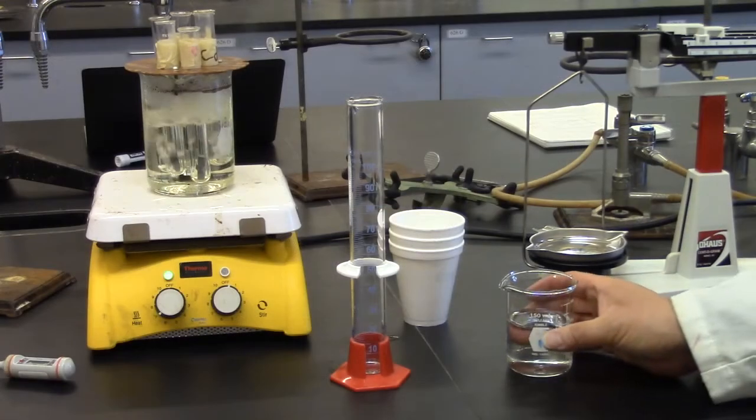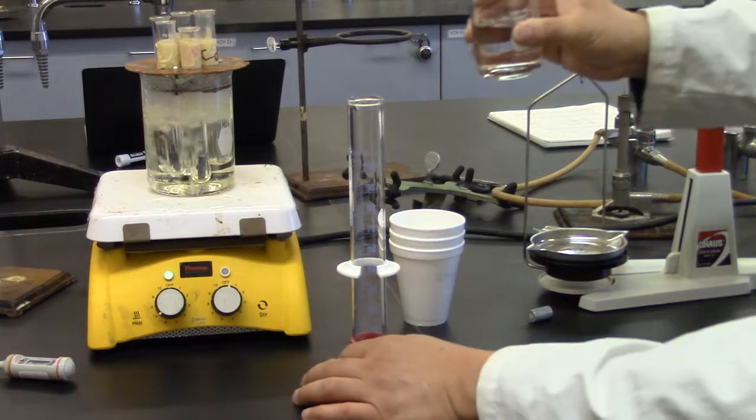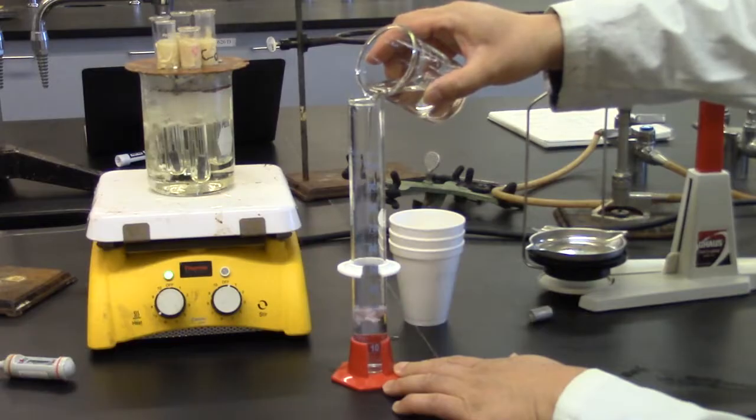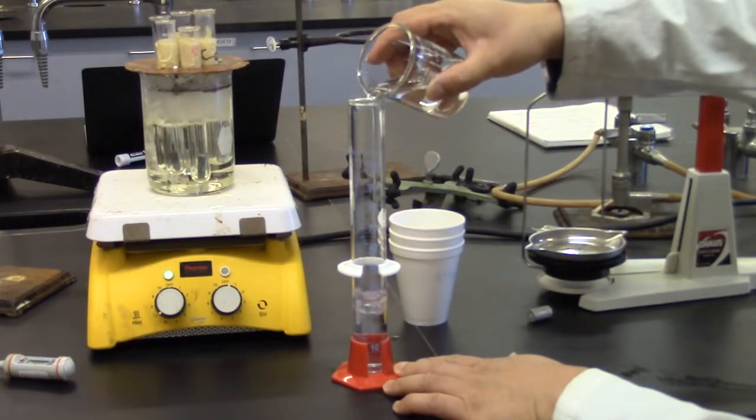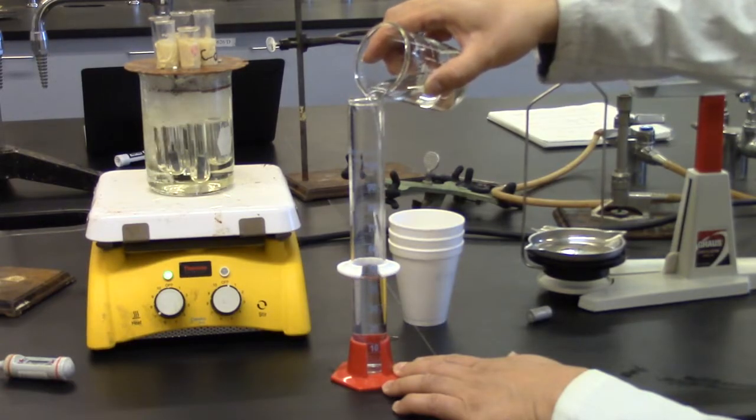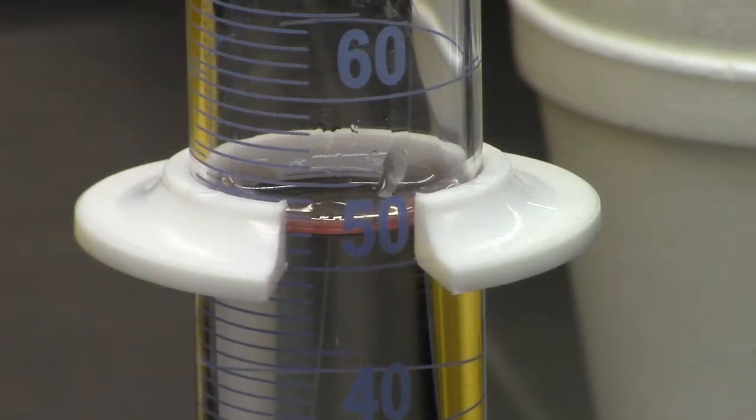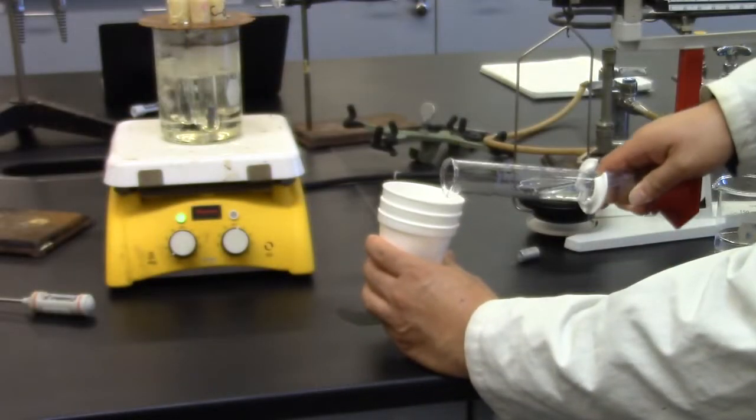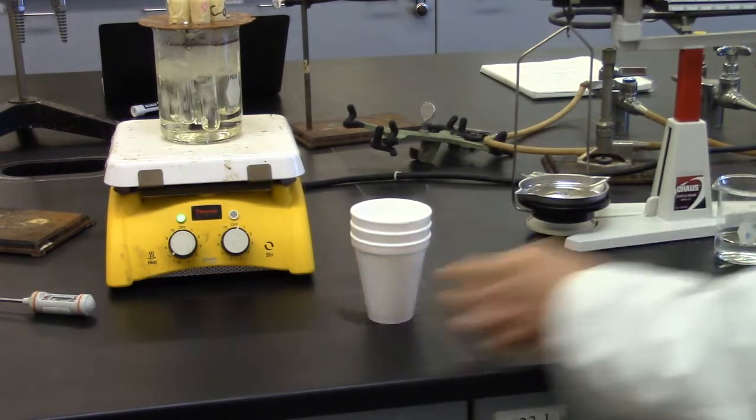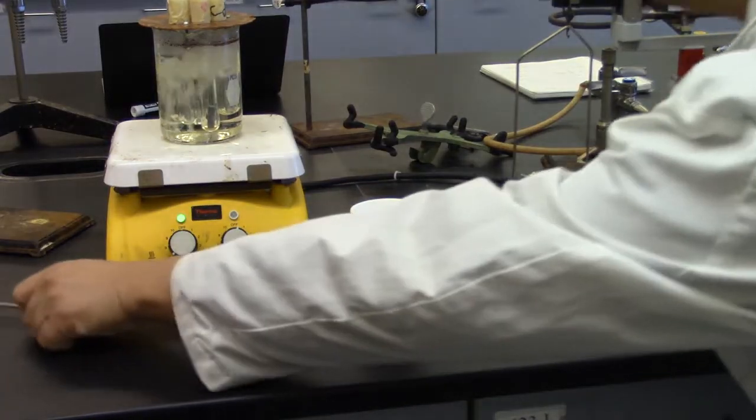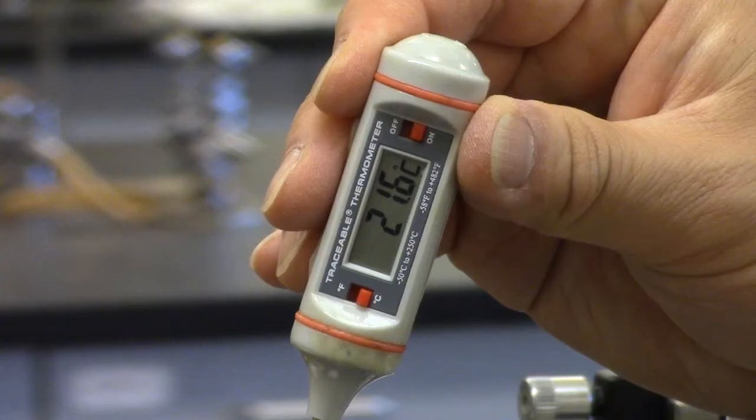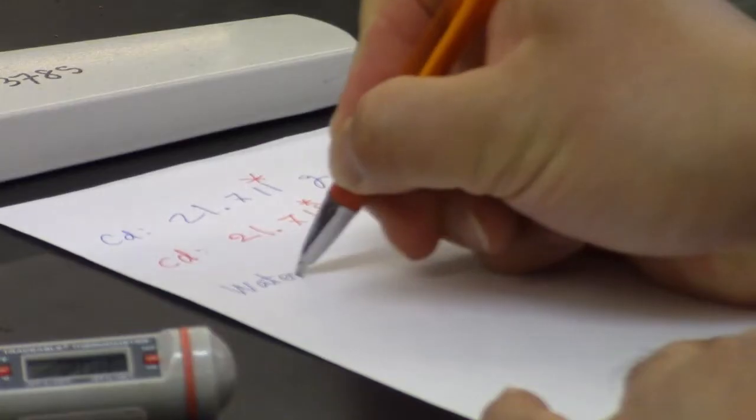While the metals are heating, we will place 50 mLs of water into our calorimeter. Now we place the water into our calorimeter and we take the temperature of the water, record the temperature of the water.